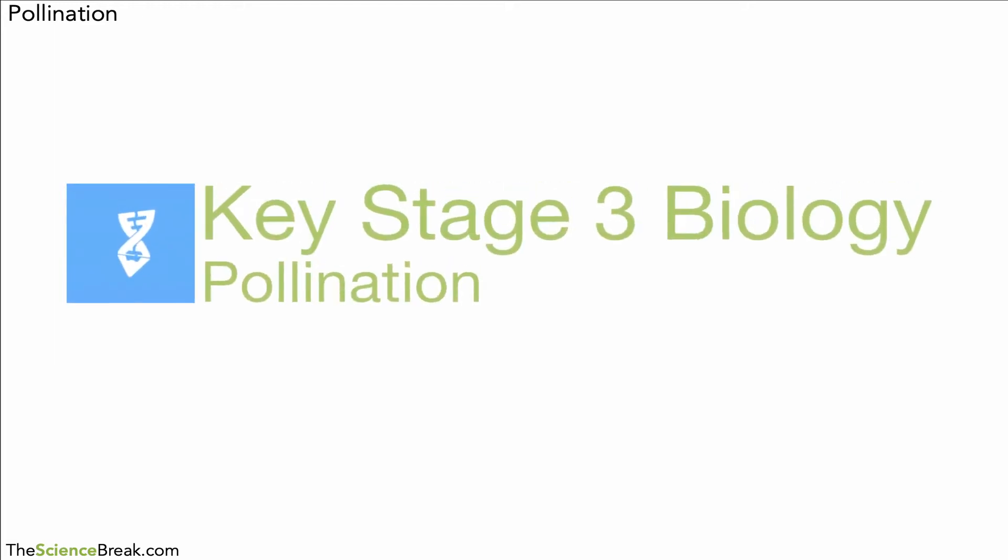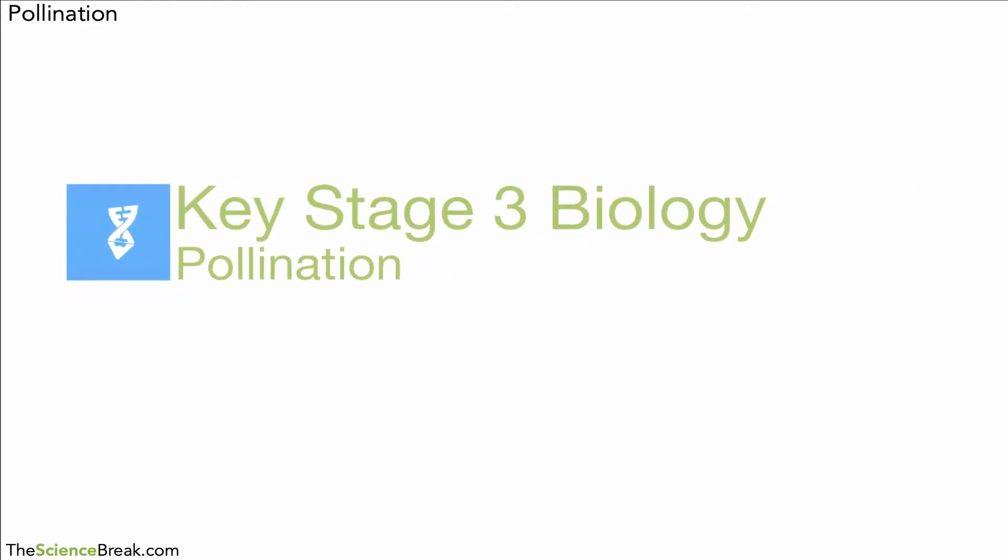Hello and welcome. Today we are doing a key stage 3 biology video on the topic of pollination in flowering plants. Pollination very importantly is the transfer of pollen from an anther to a stigma—the transfer of pollen from anther to stigma, anther being the male part of the plant, stigma being a female part of the plant.